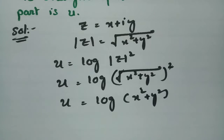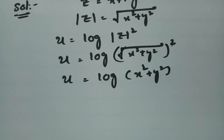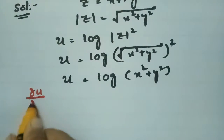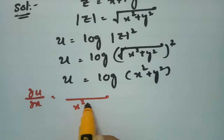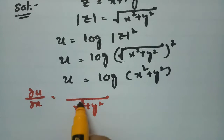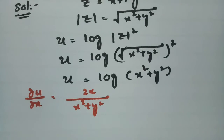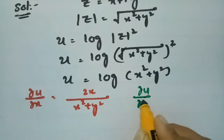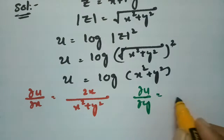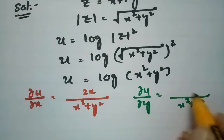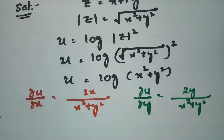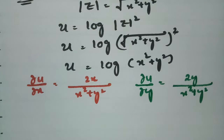Now I have to make derivatives. So ∂u/∂x = 1/(x² + y²) · 2x = 2x/(x² + y²). And the derivative with respect to y: ∂u/∂y = 1/(x² + y²) · 2y = 2y/(x² + y²).